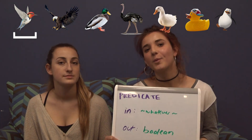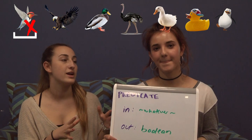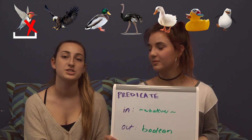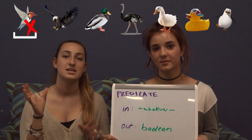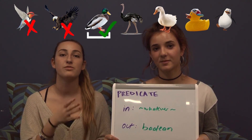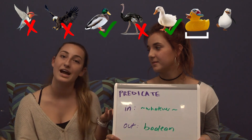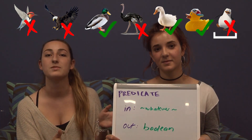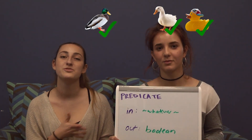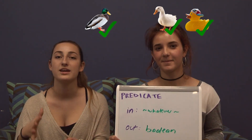And if it were a duck, we would return true. So then that predicate, which is going to be our test, is going to go into our filter function, and the filter function is going to test with the predicate every element in the list or array that you give it as the first parameter, and filter out basically all the elements that are ducks. So then filter is going to return a list of elements that satisfy the predicate.